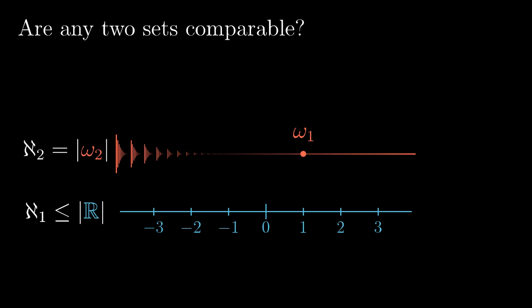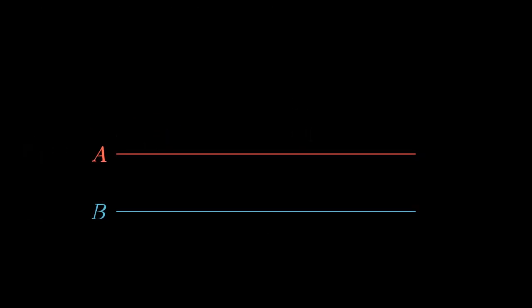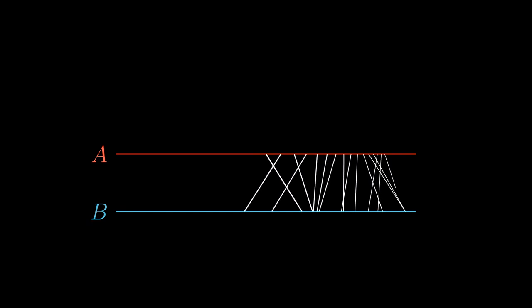In the third chapter we didn't have the necessary tools for proving that the cardinalities of any pair of sets are comparable. Now we have them. The basic idea is simple: we keep adding edges using transfinite recursion for as long as possible.